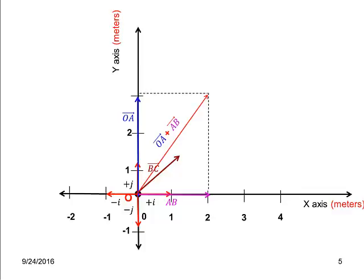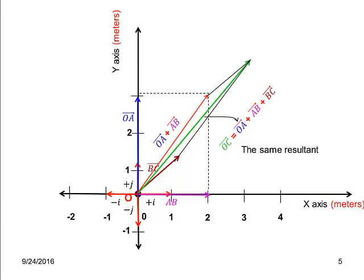To add three vectors, we can add two of them using the parallelogram method, and then add the third vector to the resultant of the two.